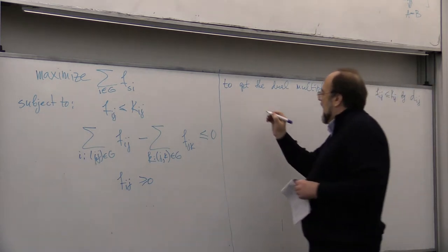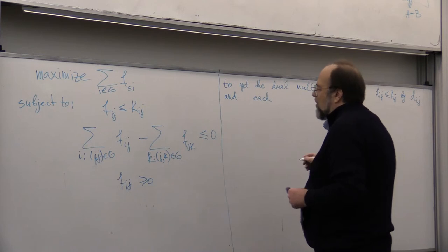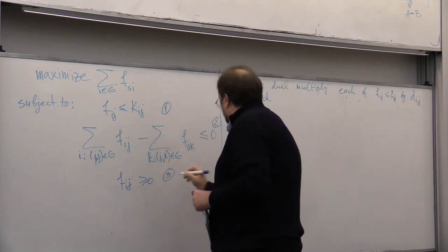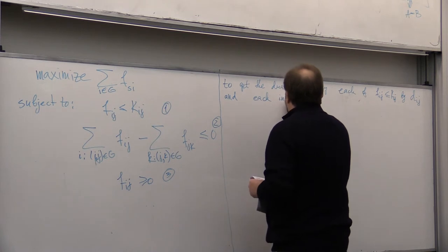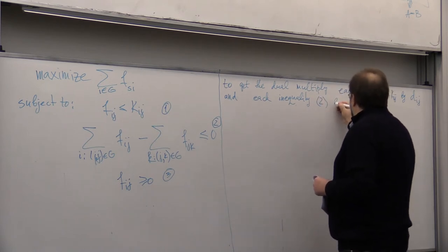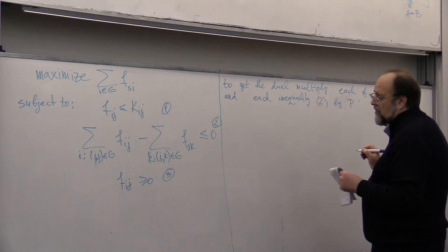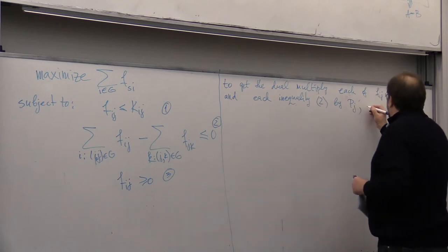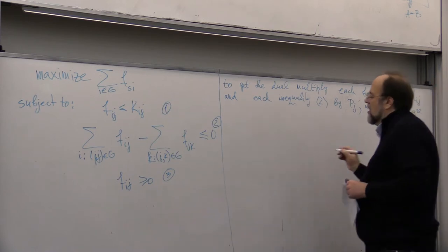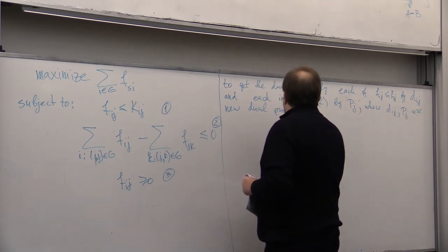multiply each of Fij less than or equal to Kij by new variable Dij, and each inequality two by Pij, where Dij and Pij are new dual problem variables, right?